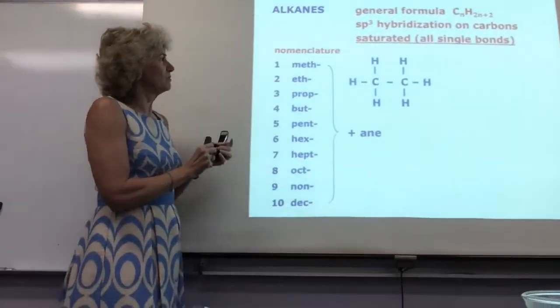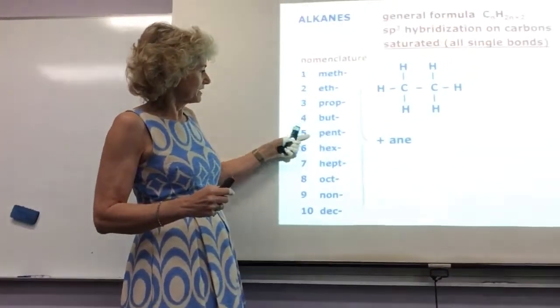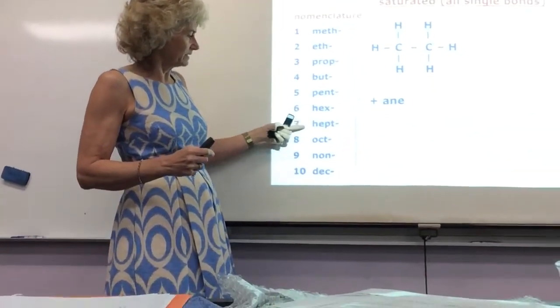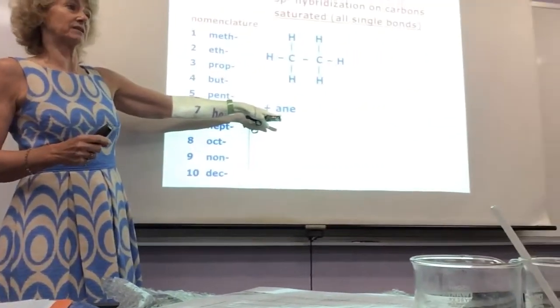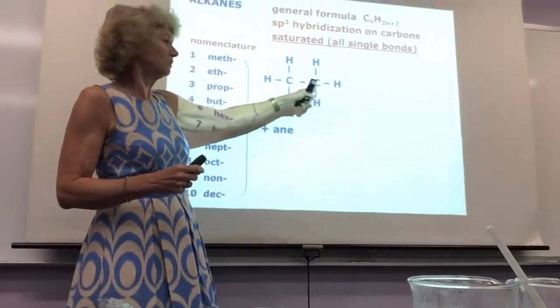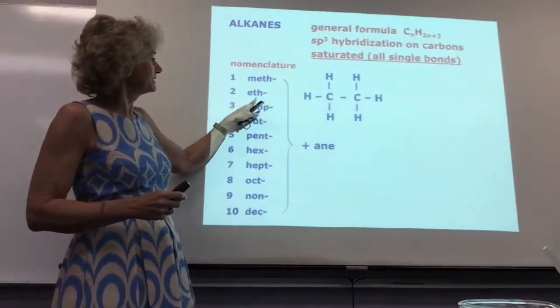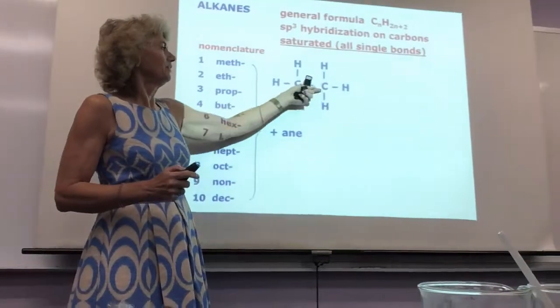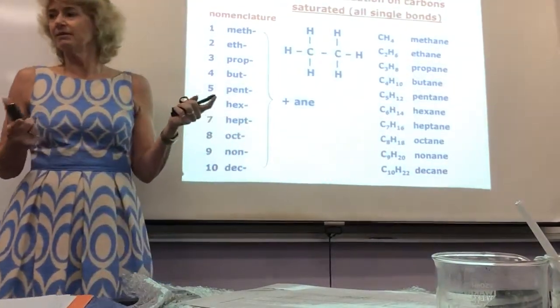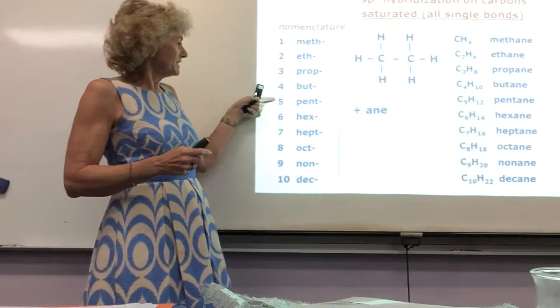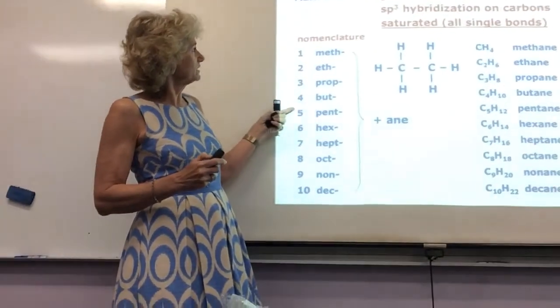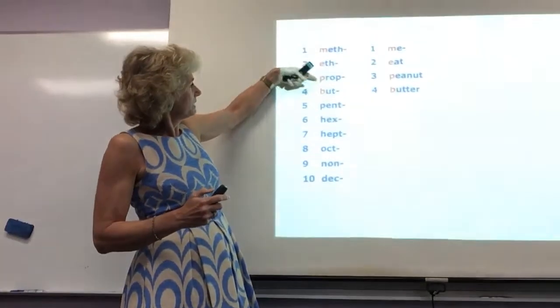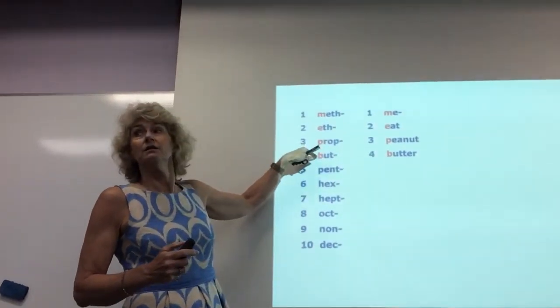Now the naming scheme works like this. Methyl ethyl propyl butyl, and then from there on, five carbons is pent, hex, hep, et cetera. And then you just slap on the ANE suffix. So you just count the carbons. So what's the name of this one? Two carbons is ethyl. It's an ANE. Ethane. So methane, ethyl propane, et cetera. So all of these from here down are ones you know. Here's how you remember the first ones. Me, eat, peanut, butter.